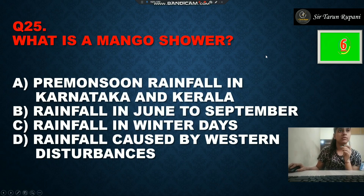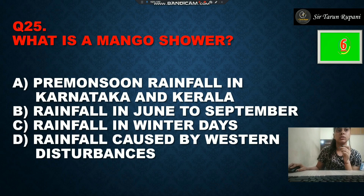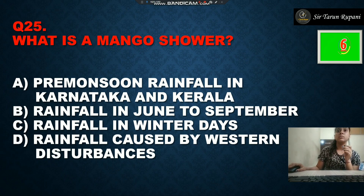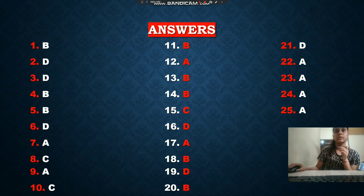What is a mango shower? Option A is pre-monsoon rainfall in Karnataka and Kerala, option B is rainfall from June to September, option C is rainfall in winter days, and option D is rainfall caused by western disturbances. Our correct answer is pre-monsoon rainfall in Karnataka and Kerala, option A.